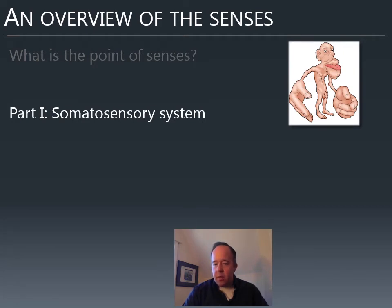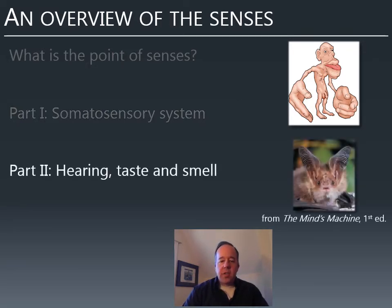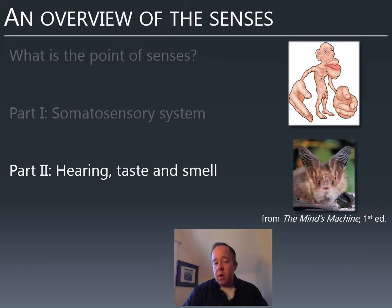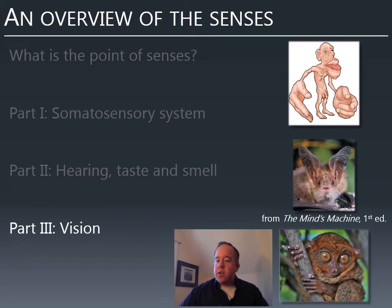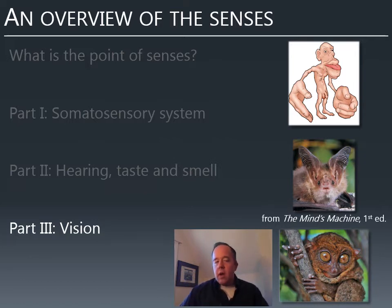Today we'll look at the somatosensory system as an example — our sense of touch, but also some other senses you might not have thought about. Next time we'll move into our senses of hearing, taste, and smell. Some senses are more sensitive than others, especially when we compare to other animals. Our sense of smell is not that great compared to a lot of animals, and our sense of hearing is okay but certainly not as good as that of a bat. Then we'll spend a third lecture on vision, which we depend on to a large degree, and primates in general tend to lean heavily on their visual systems.